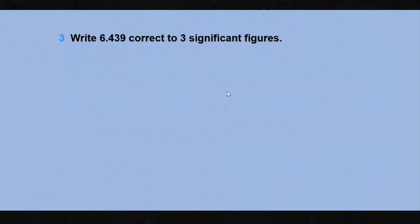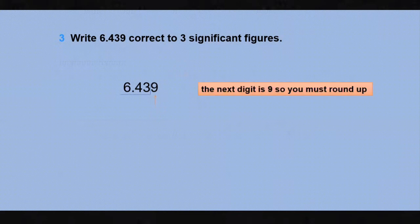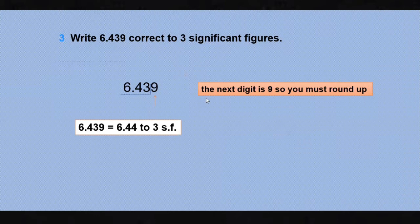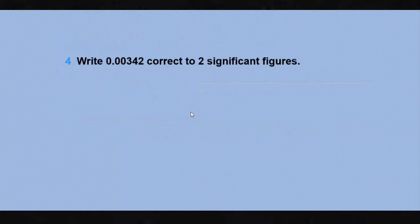Write 6.439 correct to three significant figures. All four digits in this number are significant because all are non-zero. To write to three significant figures, look at the fourth digit, which is 9. Since 9 is five or more, round up the previous digit by adding one. The answer becomes 6.44 to three significant figures. All of 6, 4, and 4 are significant.